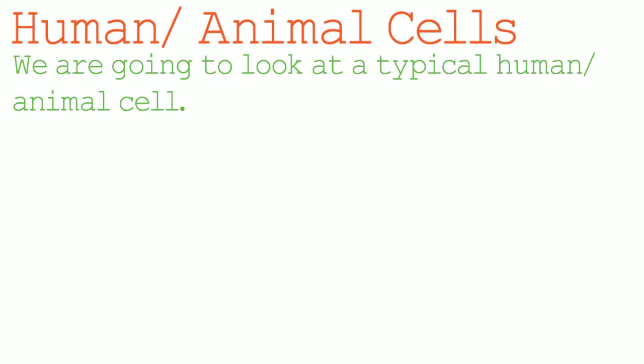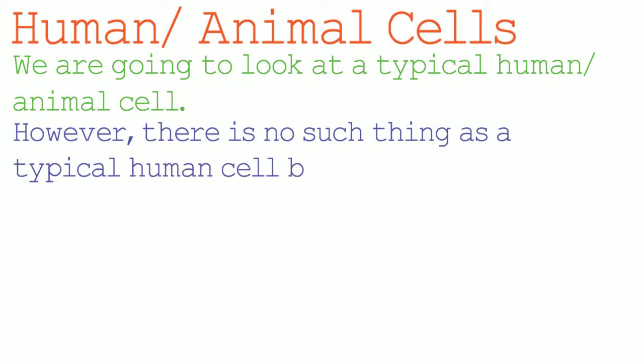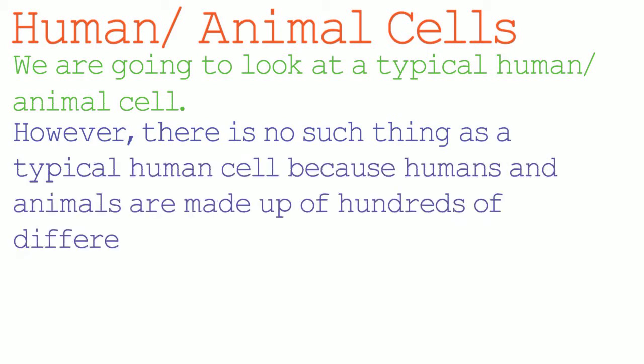However, despite these differences in the structure of the cell, most human and animal cells contain the same components. We are going to be looking at a typical human/animal cell to see what components we would expect to find there. However, there is no such thing as a typical human or animal cell because humans and animals are made up of hundreds of different types of cells.